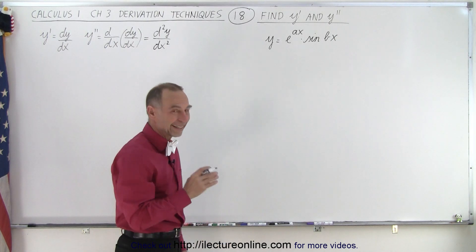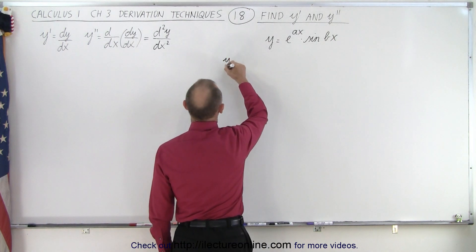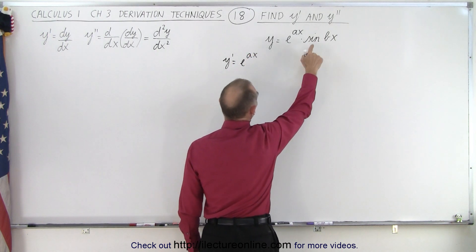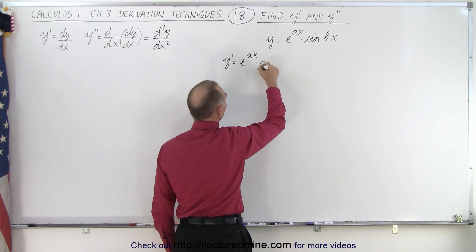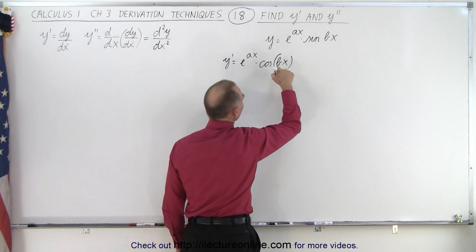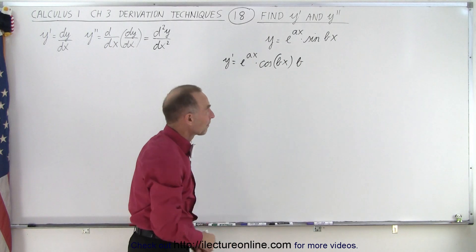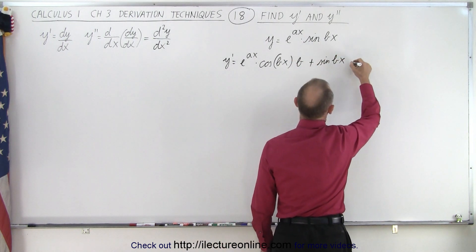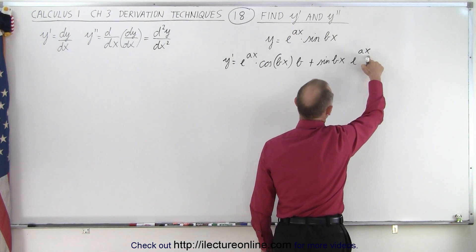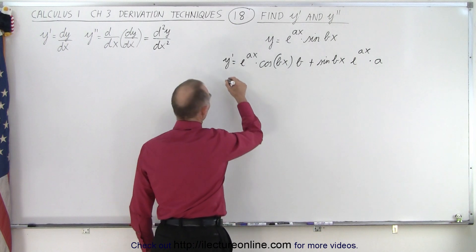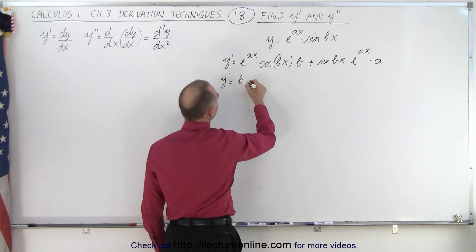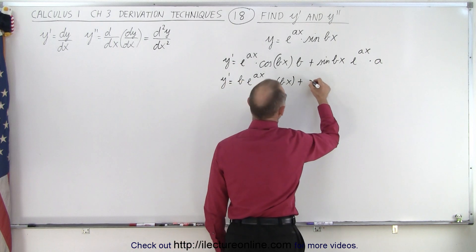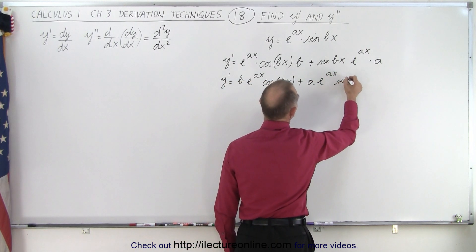Strictly following the rules is the key to getting it correct. So here we write y prime is equal to — we have a product, so we take the first, which is e to the ax, times the derivative of the second. The derivative of sine is cosine, so times the cosine of bx, times the derivative of bx which is b, because it's with respect to x. Then we go plus the second, which is the sine of bx, times the derivative of the first, which is e to the ax times the derivative of the exponent with respect to x, so times a. Simplifying, we get y prime equals b times e to the ax times the cosine of bx, plus a times e to the ax times the sine of bx.